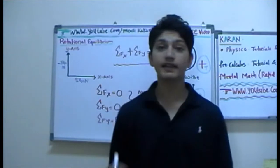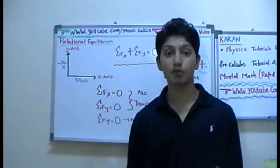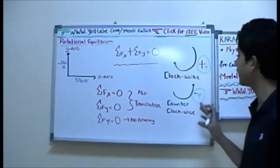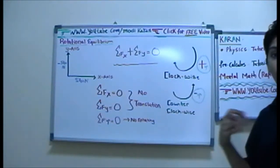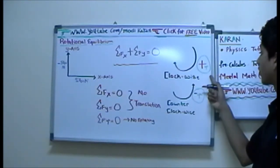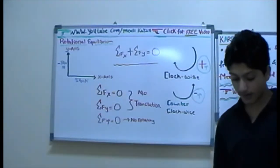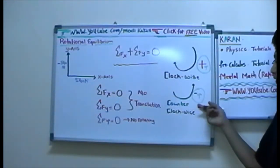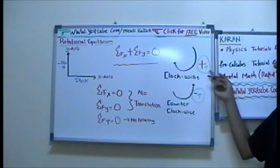So you have total equilibrium. That means when an object is in equilibrium, it's constant — it's conserved, it's not moving at all. Now, when an object is rotating clockwise, it has a positive torque. When it's rotating counterclockwise, it has a negative torque. So clockwise motion gives positive torque and counterclockwise motion gives negative torque.